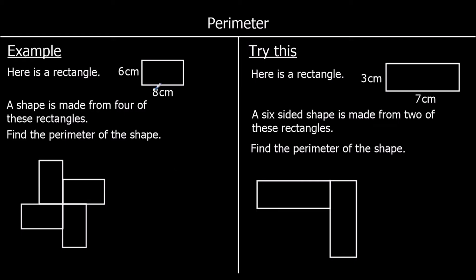This time we've got a rectangle with a length of eight centimeters and a width of six centimeters. We are told a shape is made from four of these rectangles, and we need to find the perimeter of this shape — all the way around the edge. We know every length is eight, and every width is six — so the short sides are all six. But how long are these remaining red bits? We know the whole long length is eight, and this short length is six. So eight take away six is two. So all of these red lengths are two.